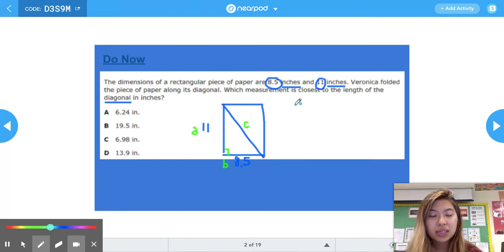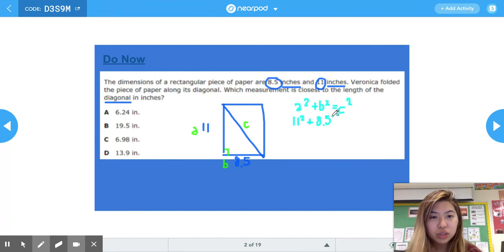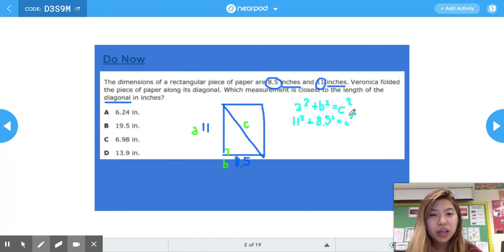So we have the equation a² + b² = c². Our a is 11, so we have 11², plus our b is 8.5, so we have 8.5² = c². All we did was plug in the values for a and b into this Pythagorean theorem equation.